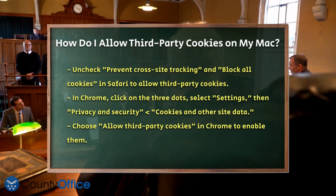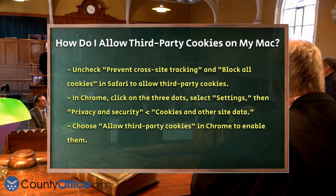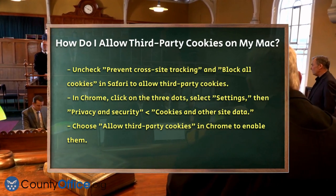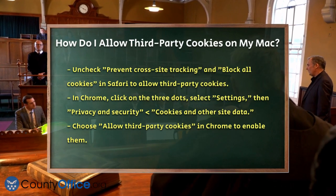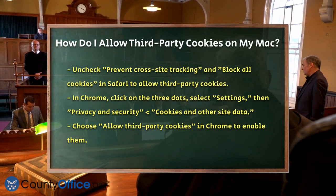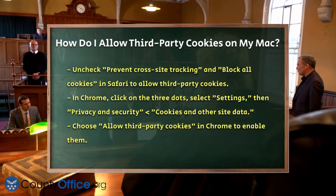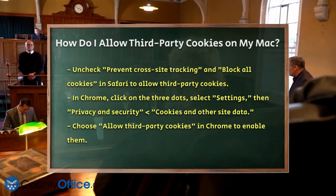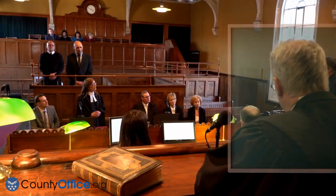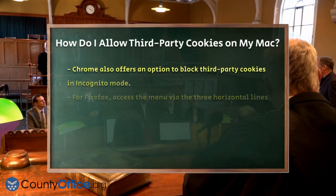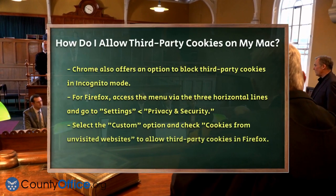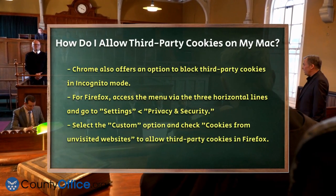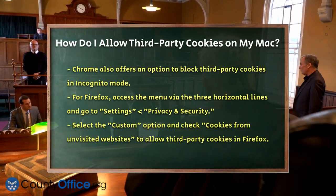Chrome. In Chrome, the process is a bit different. Open Chrome and click on the three dots at the bottom right of the browser window. Select Settings and then navigate to Privacy and Security, Cookies and Other Site Data. Here, you'll find options related to third-party cookies. Select Allow third-party cookies to enable them. If you want to allow third-party cookies for most sites but block them in incognito mode, you can choose Block third-party cookies in incognito mode.